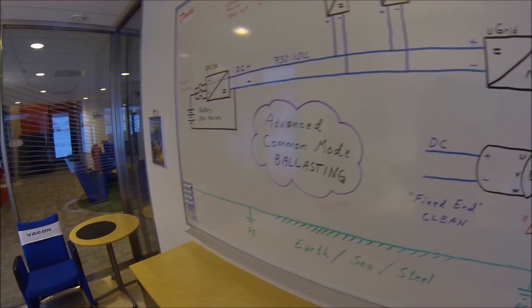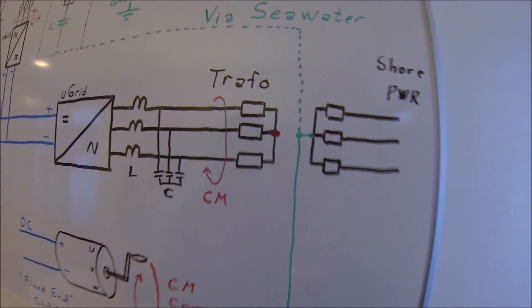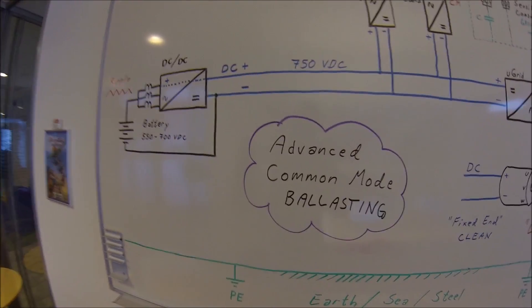The way we do this is by ballasting with HF capacitors and also putting transformers in the right places in the hybrid ship. This is what we are going to look into now.